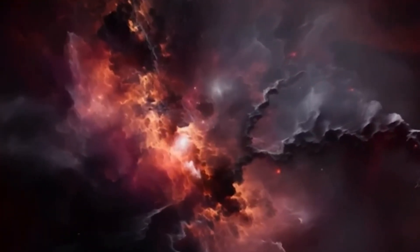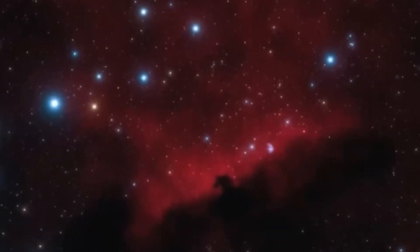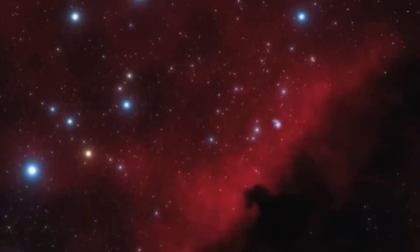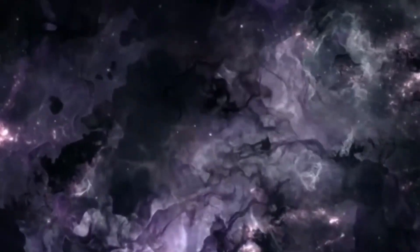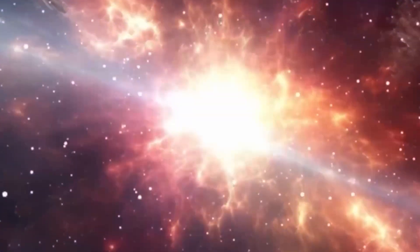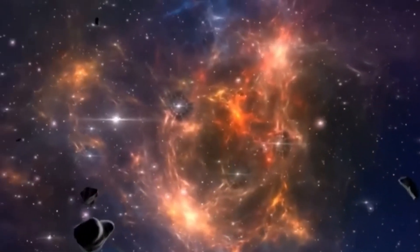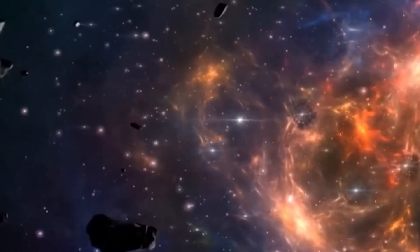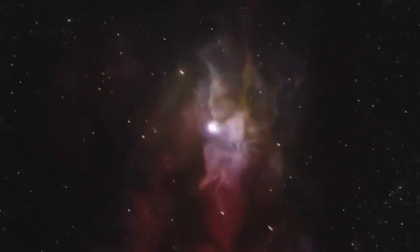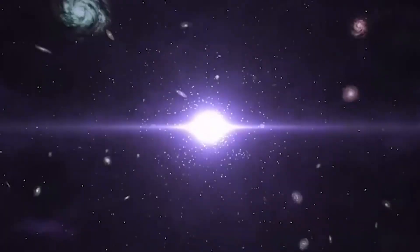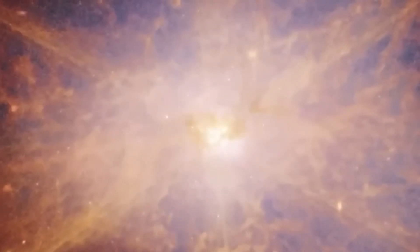Then, in the darkness, gravity began its quiet work. Invisible dark matter gathered into clumps, pulling gas along with it. These were supposed to be the first seeds of light, the earliest stars forming hundreds of millions of years after the Big Bang. That's the story we've told for decades. But Webb's new images have rewritten that story completely.